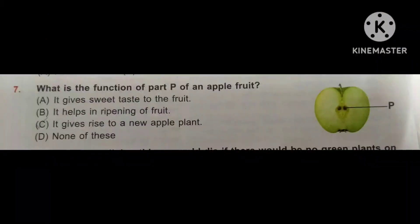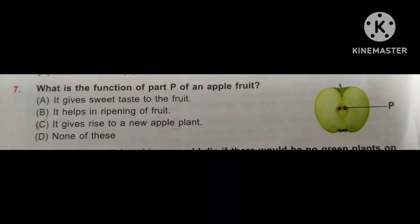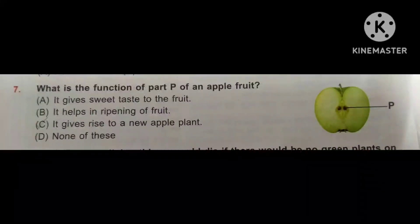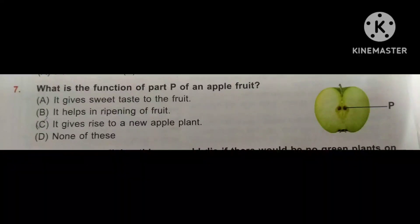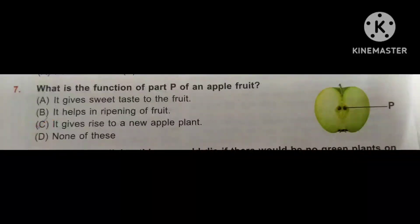Question number 7. What is the function of part P of an apple? Part P is the seed. Option A: It gives sweet taste to the fruit. Option B: It helps in ripening of the fruit. Option C: It gives rise to a new plant. Option D: None of these. Option C is correct — we all know that a seed gives rise to a new plant.